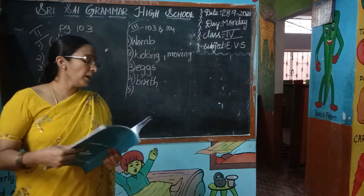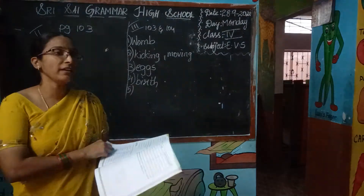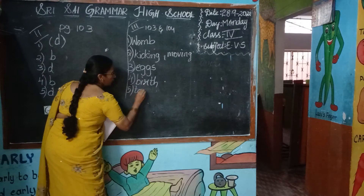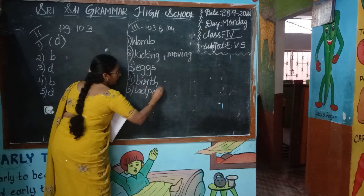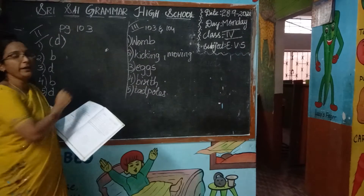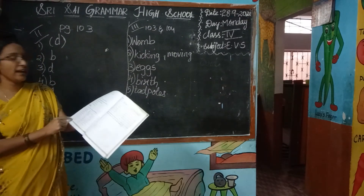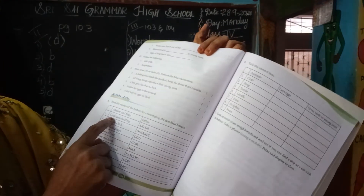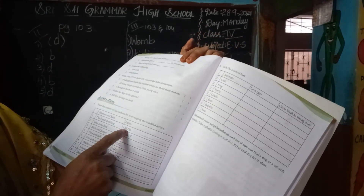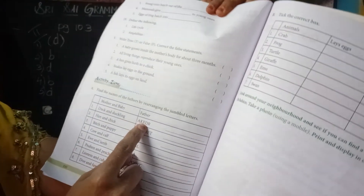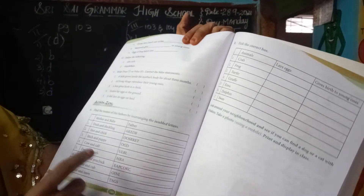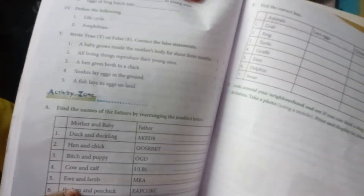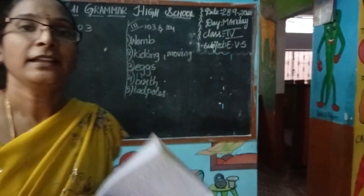Fifth one — the egg of a frog is hatched into a tadpole. Today we are going to complete these two. You are finishing your term work as well as your homework. You are going to complete these, children. Mother, baby, father — this is jumbled around, arrange correctly. This bit you are going to do as homework. Thank you.